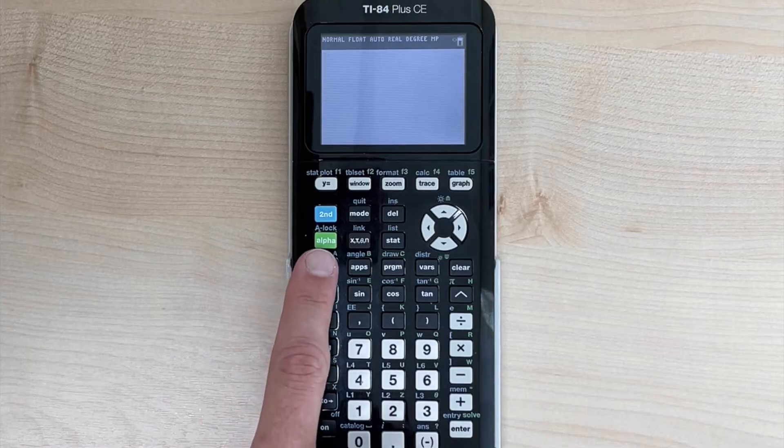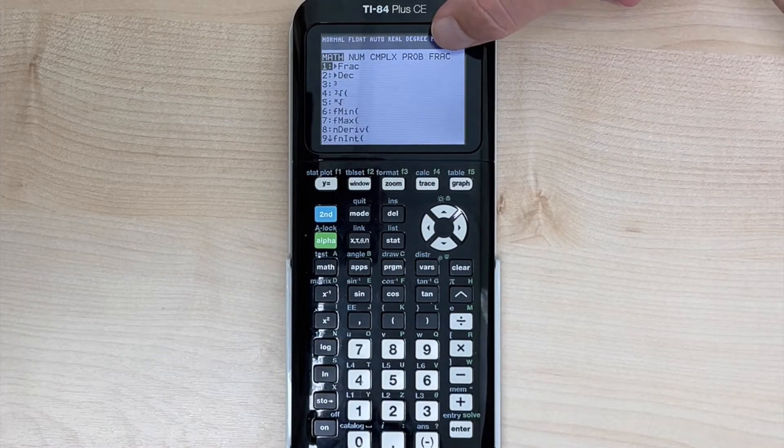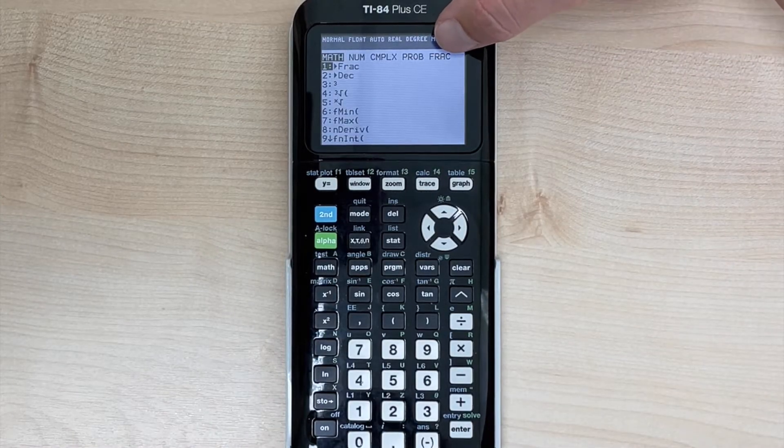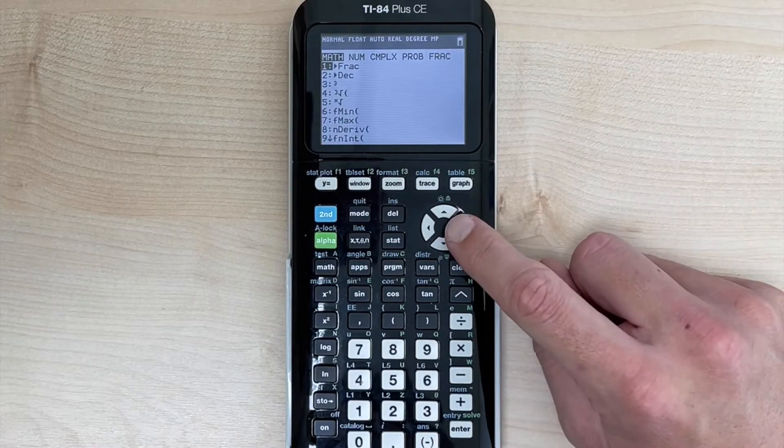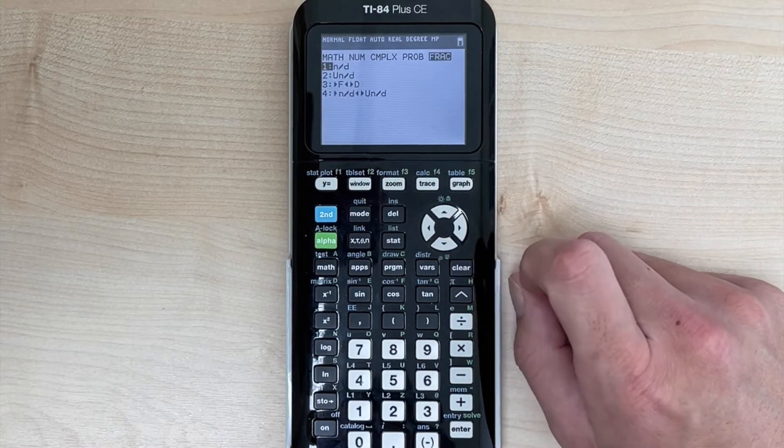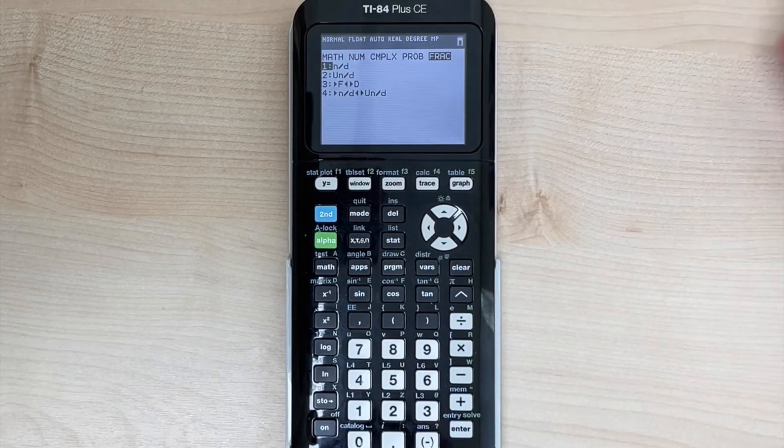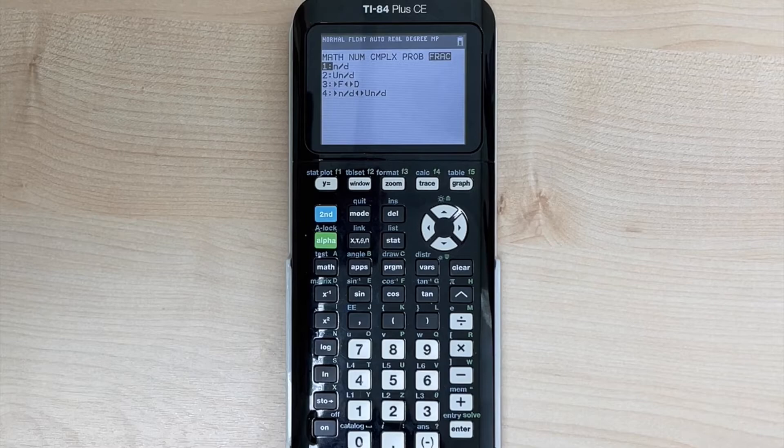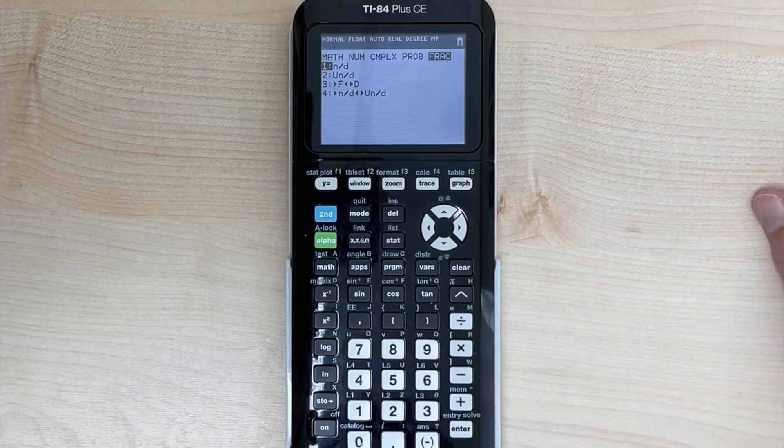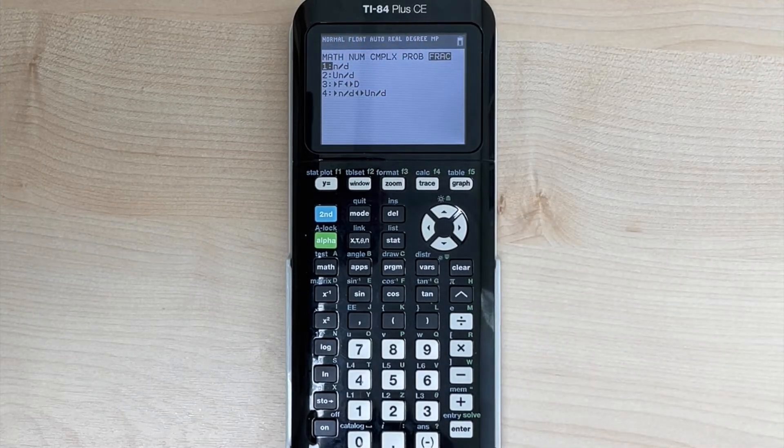However, we are going to hit the math button. And if you notice at the top right here, we see the word FRAC. Fraction. So we're going to use our right directional key to go over to fraction. And now we have four options here. The first one is what we want to choose. That's going to let us type in just a standard normal fraction. So N stands for numerator, D stands for denominator.